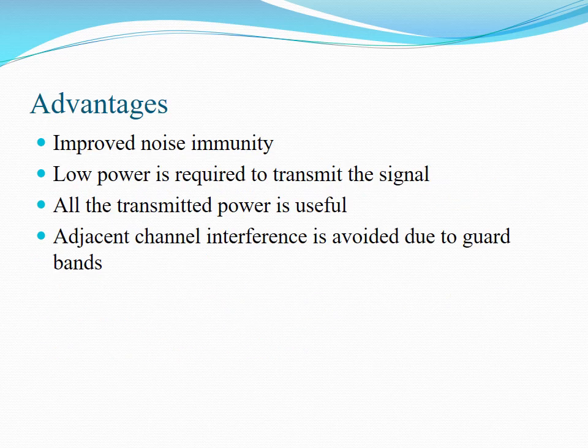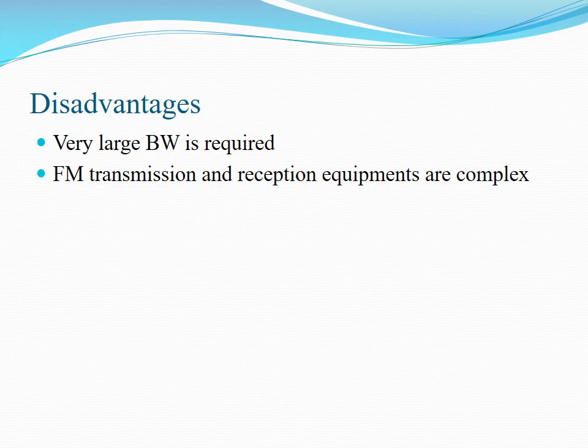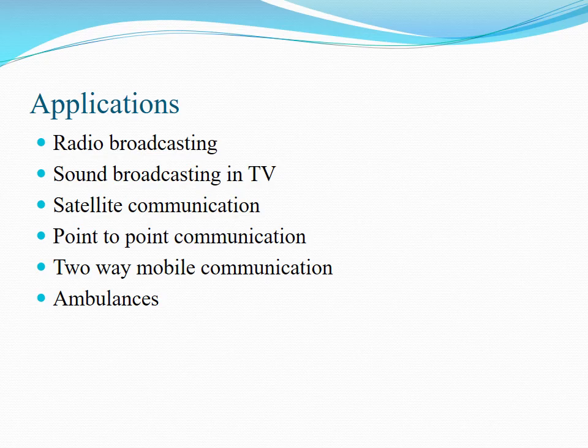These are the advantages of the FM signal: it improves noise immunity, low power is required to transmit the FM signal, all the transmitted power is useful, and there is no adjacent channel interference due to guard bands. Some drawbacks: a very large bandwidth is required to transmit the FM signal, and FM transmission and reception equipment are complex. Applications of FM include radio broadcasting, sound broadcasting in TV, satellite communication, point-to-point communication, two-way mobile communication, and ambulances. Thank you.